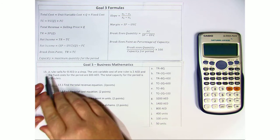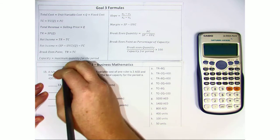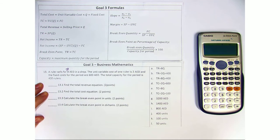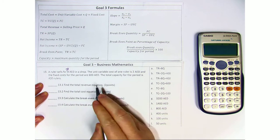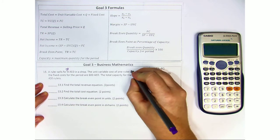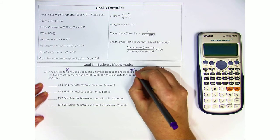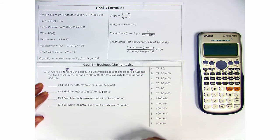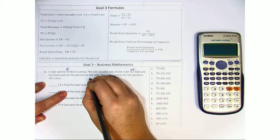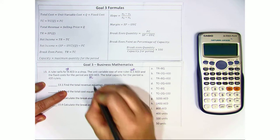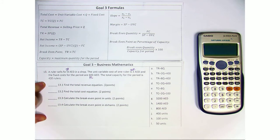So let's start with this. A ruler sells for 8 dirhams, so 8 dirhams is my selling price. The unit variable cost of one ruler is 2 dirhams, so this is my UVC, or my unit variable cost. And the fixed cost for the period are 600, so that's my fixed cost. The total capacity for the period is 400 rulers.